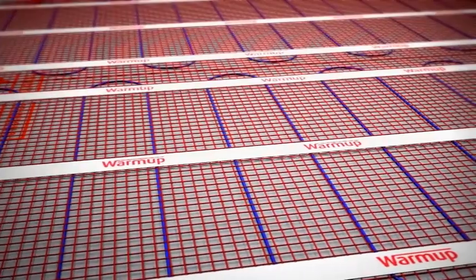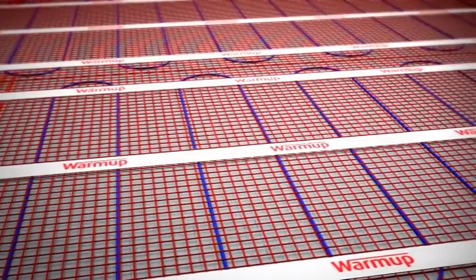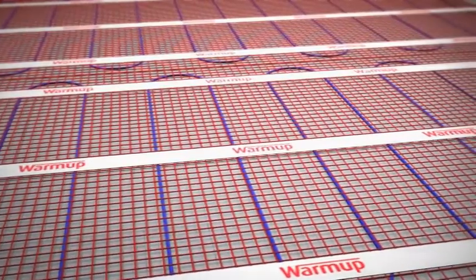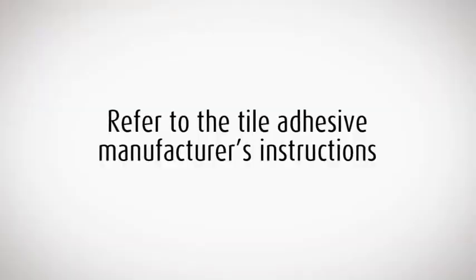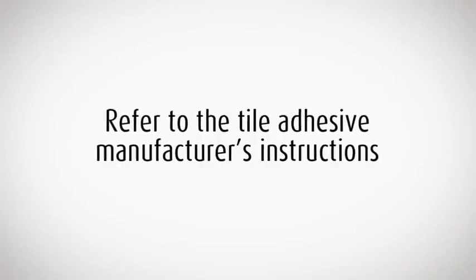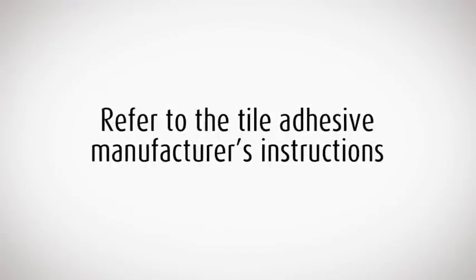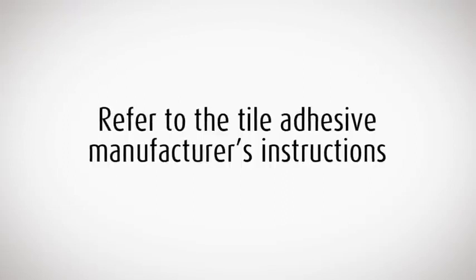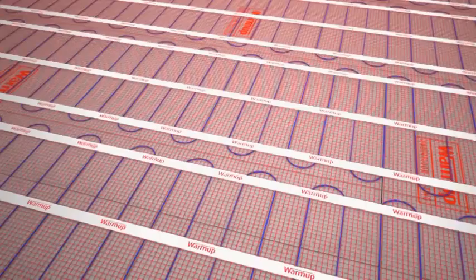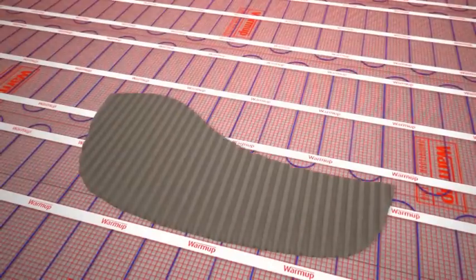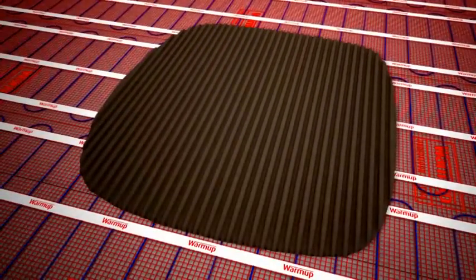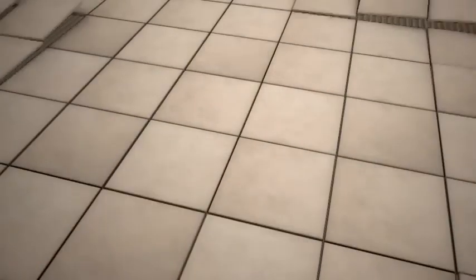Before you start tiling, check the mat and heater wire is taped securely to the floor. You must make sure that the tile adhesive and grout you use is compatible with underfloor heating. These are widely available at Warmup resellers. Lay your tiles as normal, taking extra care not to damage or move the matting or heating wire with the trowel.